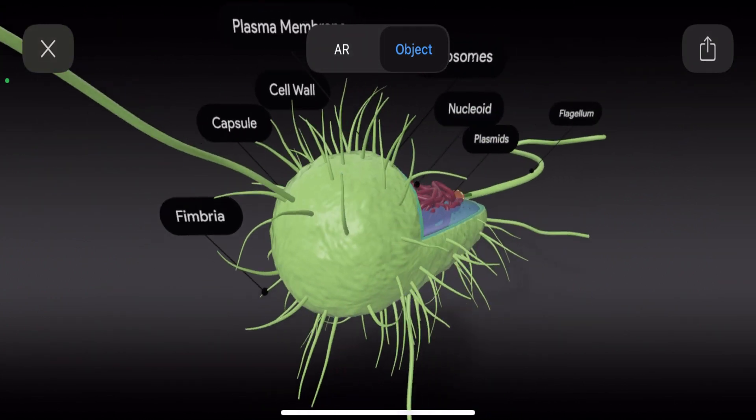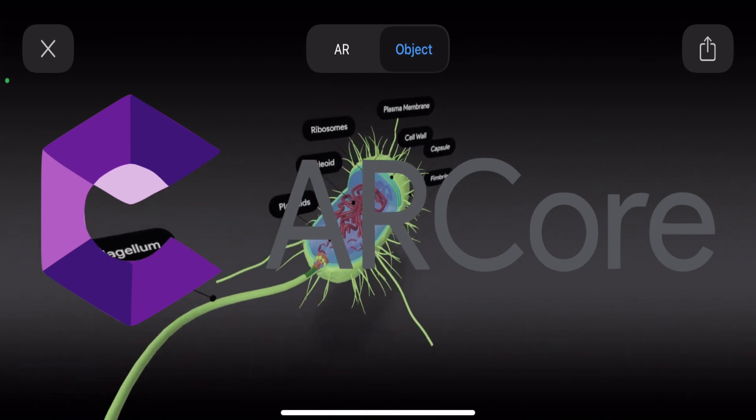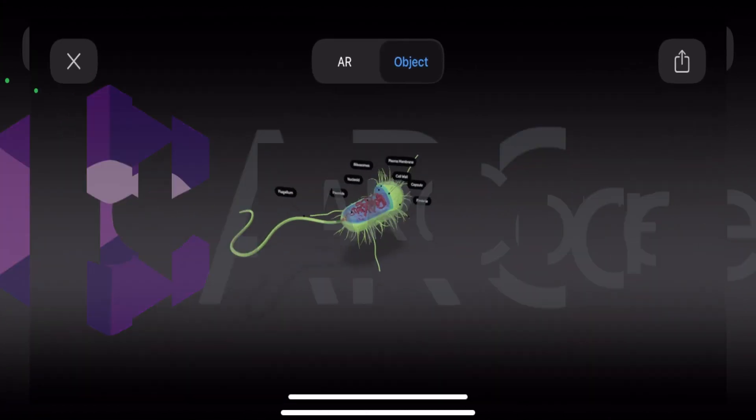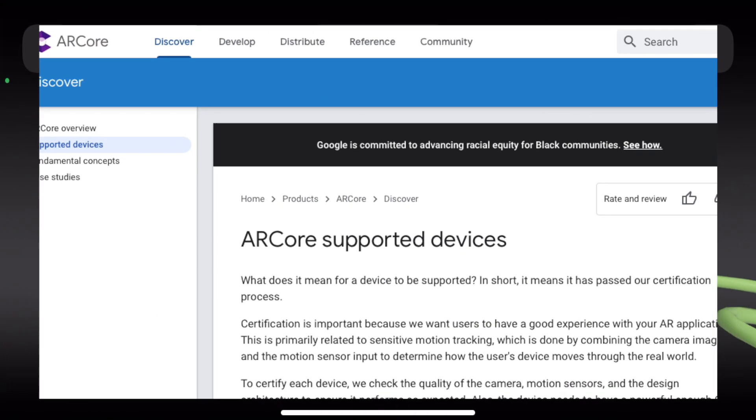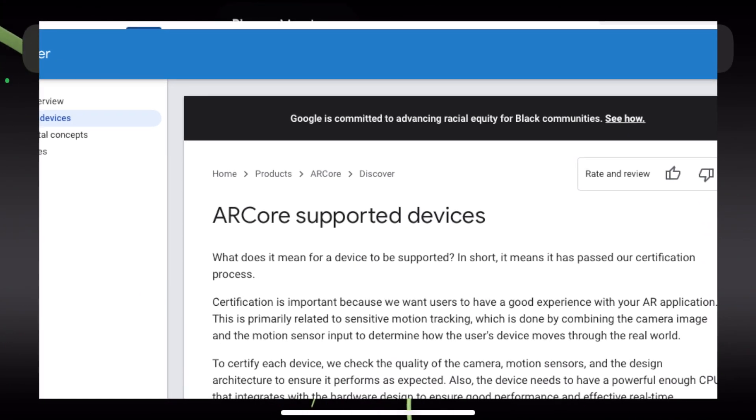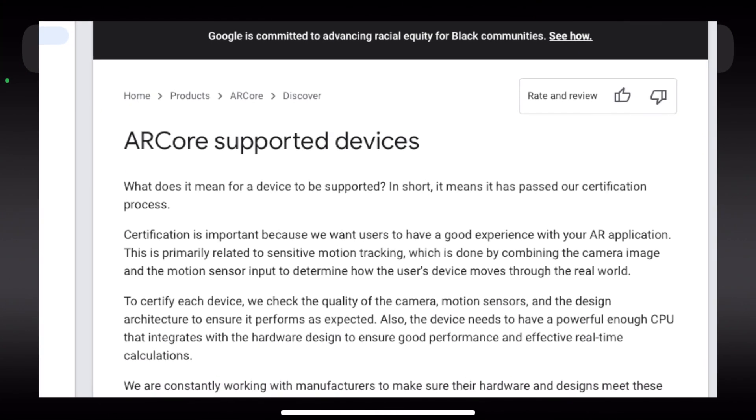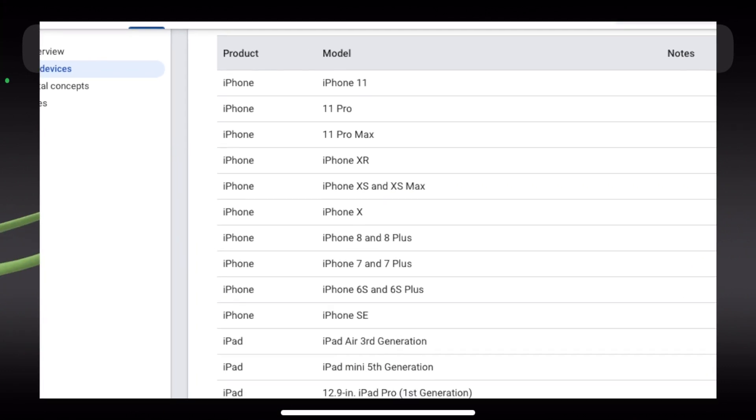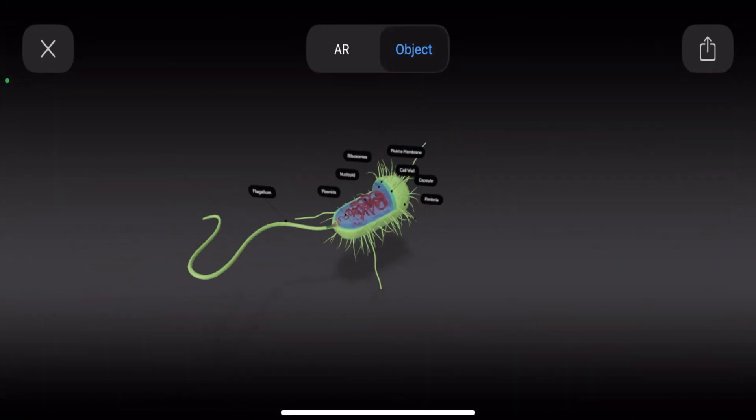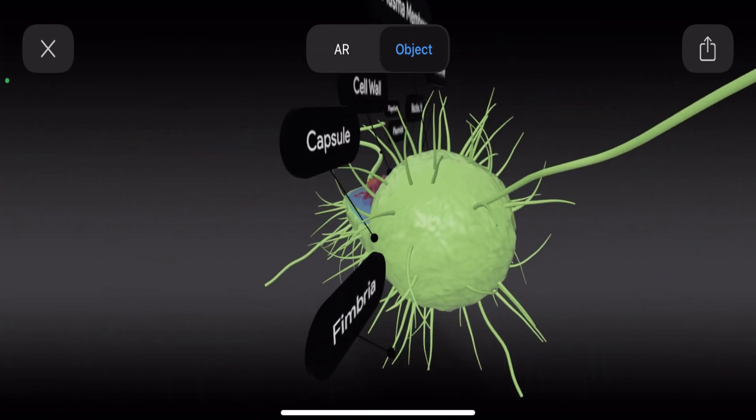to view the given model in augmented reality, your smartphone must be AR core compatible in the case of Android phones. I will give a link in the description containing the list of Android devices having AR enabled in them. You can check yourself to see if your Android phone is AR core enabled or not. In the case of iPhones, you can experience AR on iPhone 6s and higher models. So let us see now how we can study the bacteria in AR itself.